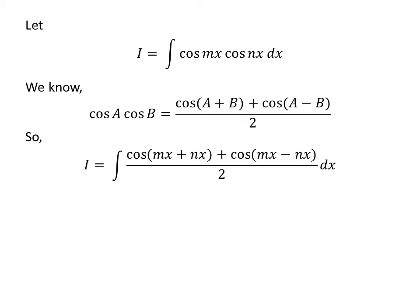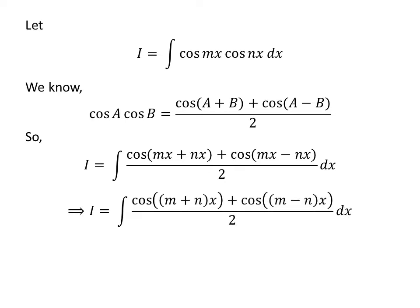I have replaced cosine of m times x times cosine of n times x in the integral by its value as per the above trigonometry identity. So I is equal to the integral of cosine of (m+n)x plus cosine of (m−n)x, upon 2, with respect to x.